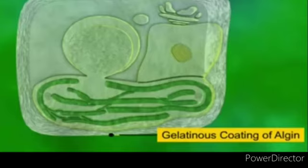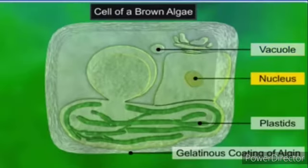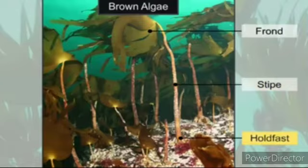The vegetative cells have a cellulosic wall usually covered on the outside by a gelatinous coating of algin. The protoplast contains, in addition to plastids, a centrally located vacuole and nucleus. The plant body is usually attached to the substratum by a holdfast, has a stalk called a stipe, and a leaf-like photosynthetic organ called the frond.